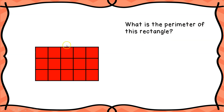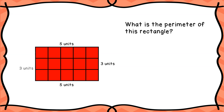Now let's find the perimeter of this rectangle by counting units. The top side has five units, the side going down has three units, the other long side has five units, and the remaining side also has three units. When we add those together: five plus three is eight, plus five more is thirteen, plus three is sixteen. The perimeter of this rectangle is sixteen units.